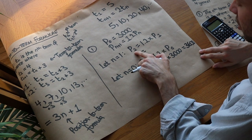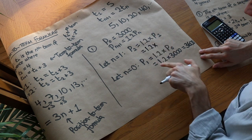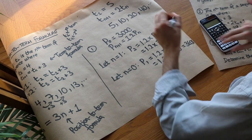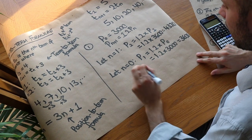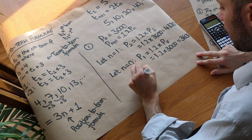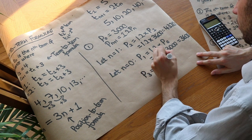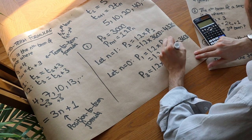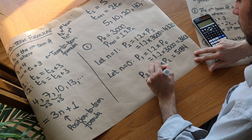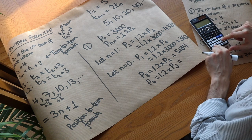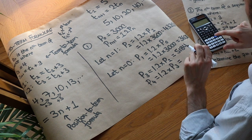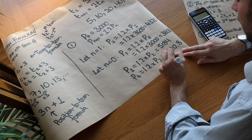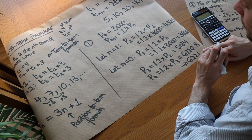Then P2 is 1.2 times P1 = 1.2 times 3600, which gives 4320. Then P3 is 1.2 times P2 = 1.2 times 4320, giving 5184. And finally, P4 is 1.2 times P3 = 1.2 times 5184, giving 6220.8. But we can't have a fractional population, so that rounds to 6221 to the nearest whole number.